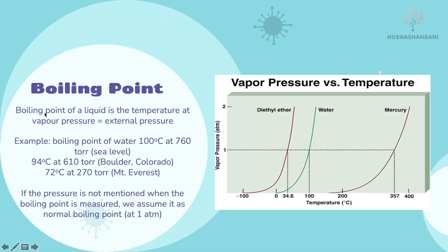Boiling point of a liquid is the temperature at which vapor pressure equals external pressure. For example, the boiling point of water is 100°C at 760 torr, 94°C at 610 torr, and 72°C at 270 torr. So boiling point changes with pressure — it is the temperature at which vapor pressure equals external pressure.